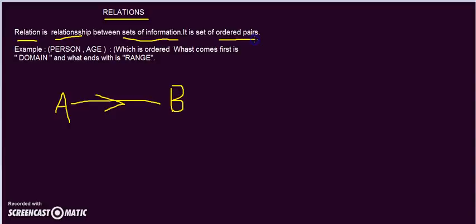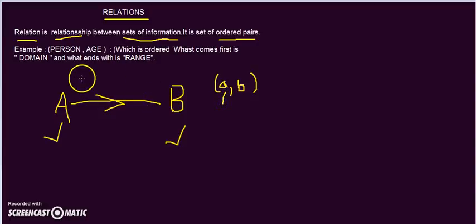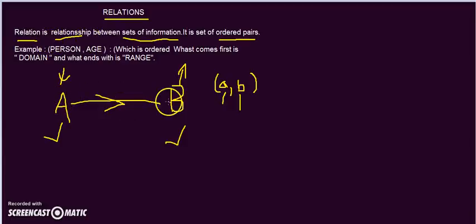A set of ordered pairs where the first element is always from the first set and the second element is always from the second set — that is what we call an ordered pair. For example, A and B form an ordered pair where the first element always comes from set A and the second element always comes from set B. So a relation is nothing but a relationship between two sets of information, represented as ordered pairs.